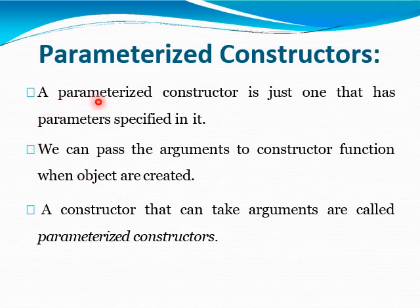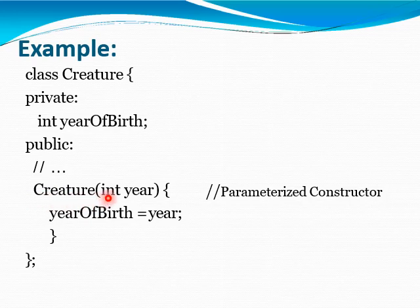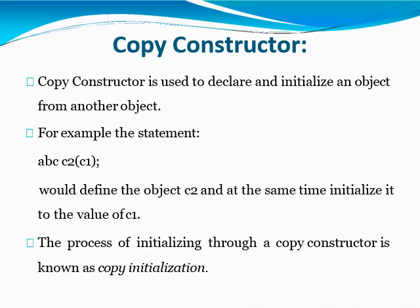Next is the Parameterized Constructor. A Parameterized Constructor is one that has parameters specified in it. We can pass arguments to the constructor function when an object is created. A constructor that can take arguments is called a Parameterized Constructor. For example, class Creature has a private integer member, year of birth. In the public section, Creature is a Parameterized Constructor with an integer parameter. We can take an argument from the object as a parameter, and this parameter is assigned to our variable. That is called a Parameterized Constructor.